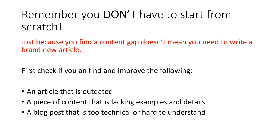You might also find a piece of content that's lacking examples or details. For example, you might have an article about a product or service where you could add examples of how it works or how it's used — and that allows you to use a new keyword. If you find a branded keyword, such as a particular product name, you could go into a piece of content that lacks detail, use that product name as an example, and potentially rank for both the original keyword and the new one you identified as a content gap.